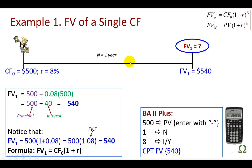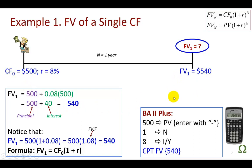So what does this really tell us? The significance is that if you can earn 8% over a one-year period, the amounts — $500 today and $540 a year from now — have the same value. So you should be indifferent.